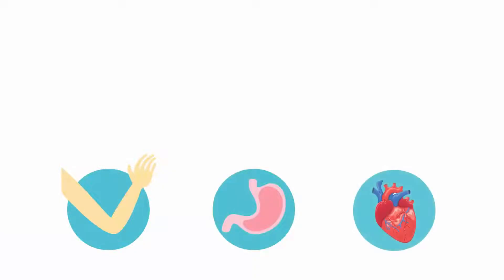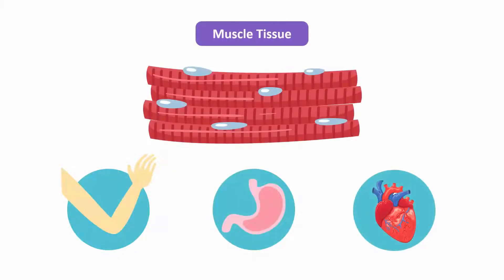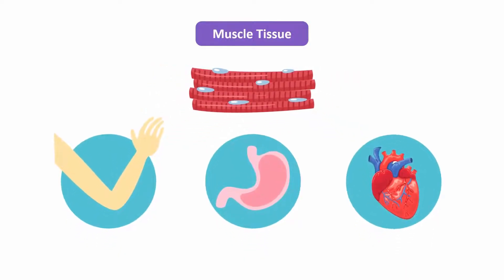The muscles in our arms, legs, stomachs, and hearts are made up of muscle tissue. The muscle tissue is used in places of movement and can take a lot of pressure. For example, the muscle tissue in our arms and legs allows us to stretch and move. The muscle tissue in the stomach helps with the digestion of food, and the muscle tissue in the heart helps with pumping blood all over our body.